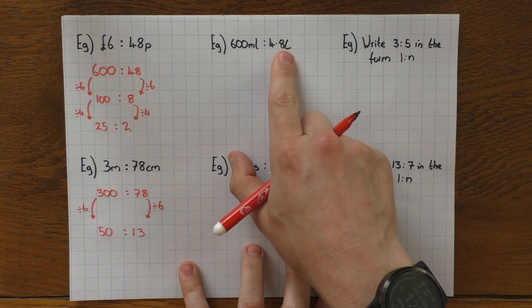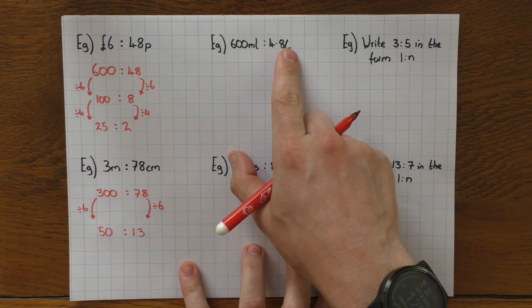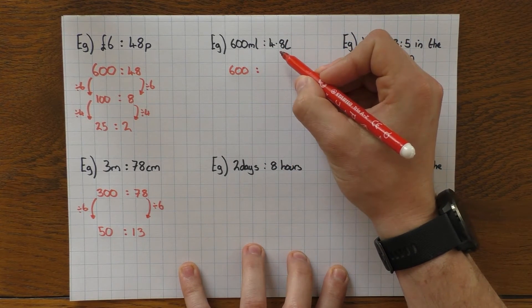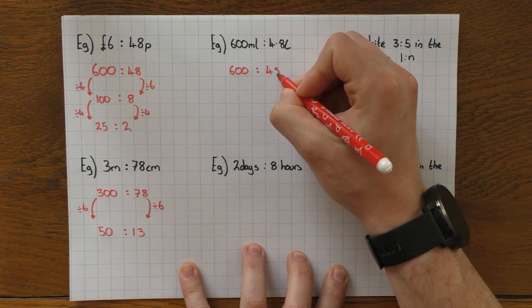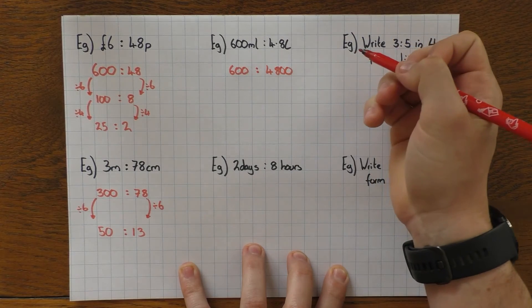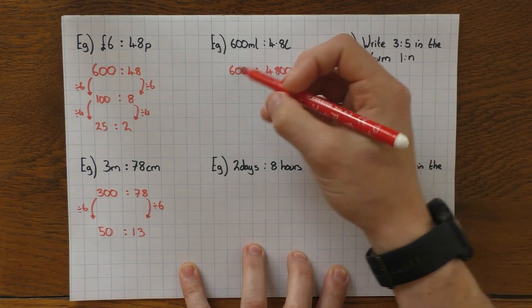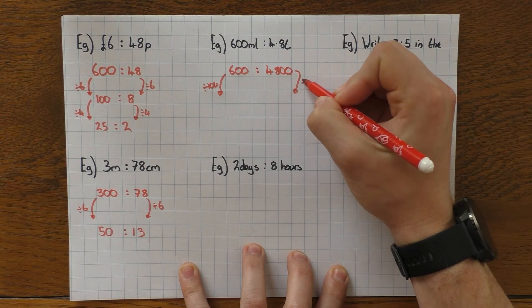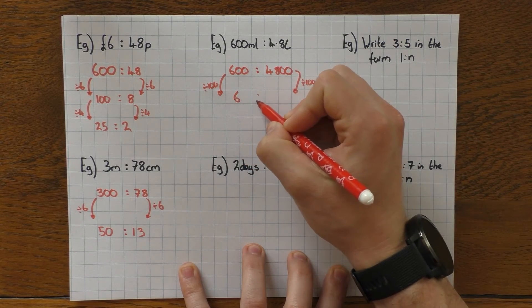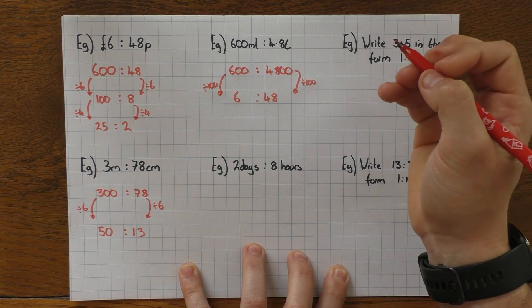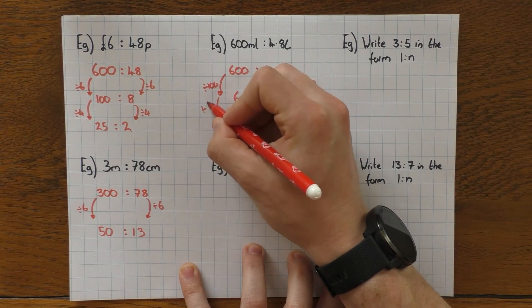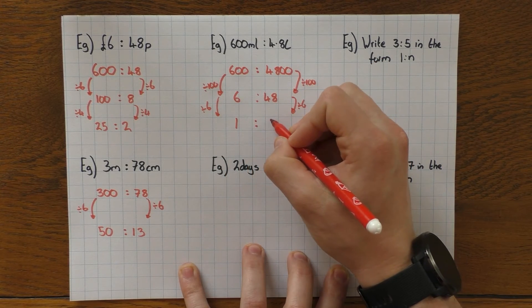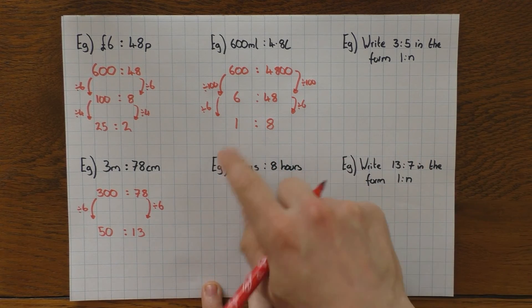Different units again. Milliliters and liters. I'm going to convert the liters to milliliters so I'm not working with decimals. So I've got 600. And there are 1,000 milliliters in one liter. So that's going to be 4,800 milliliters. And again, I start simplifying. Both end in zeros. So that's a nice one to start with. I can divide by 100, which leaves me with 6 to 48. Much nicer. What goes into 6 and 48? We can divide by 6 both sides, which leaves me with 1 to 8. And we're done. Obviously, it's 1. I can't go any further.